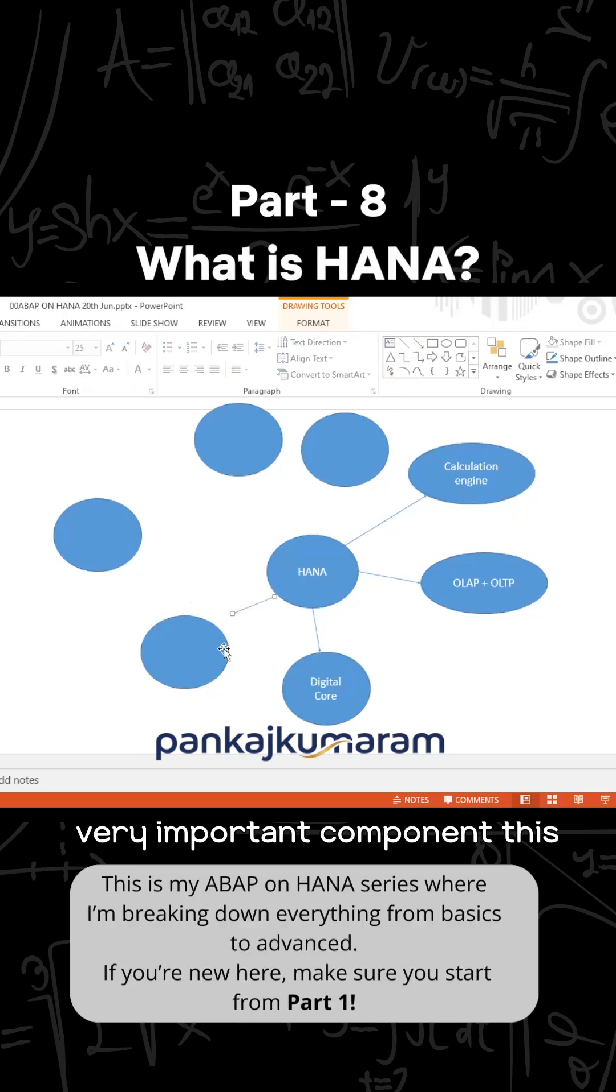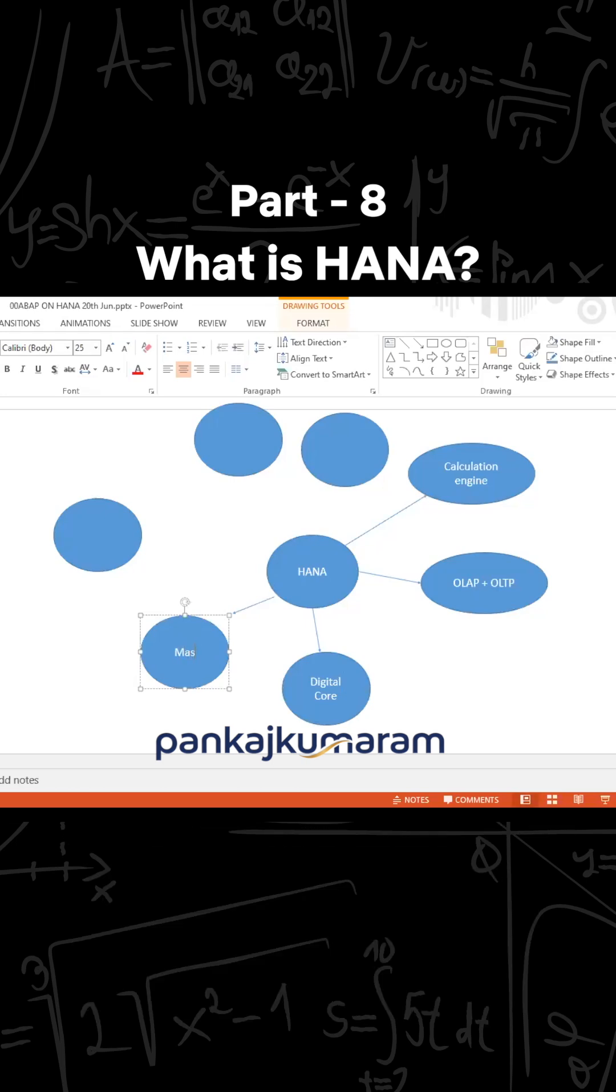Another very important component that HANA has, another specification we can say, is that it has the power of massive parallel processing. How is it possible? Due to the multiple cores it has. It contains a multi-core processor—very powerful processor, very high-speed processor. That's why it is possible.